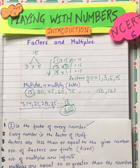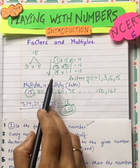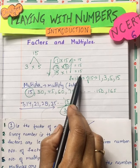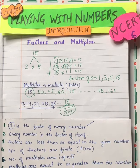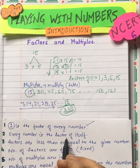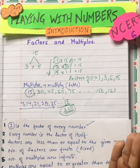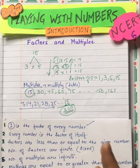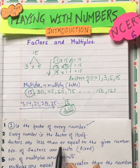Second pointer: every number is a factor of itself. We have seen here — 15 into 1 is 15. So every number multiplied by 1 will give the same number. Therefore, every number is a factor of itself.